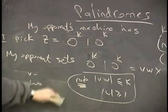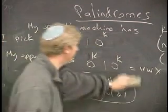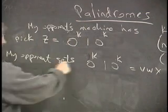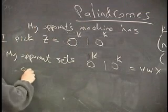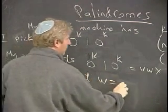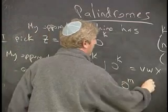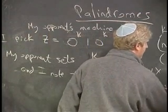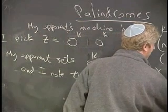The only thing you could possibly do, and I will note this, my opponent sets this equal to Vw, and I note that the w equals zero to the m for some m between one and k.